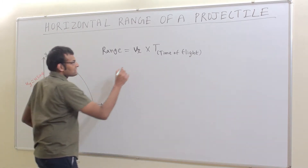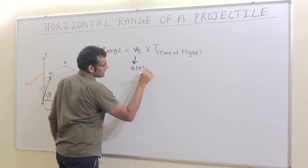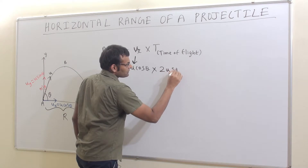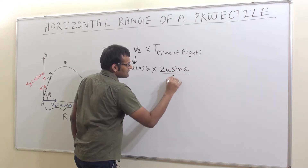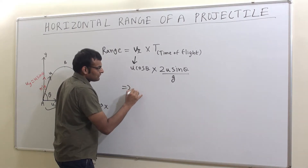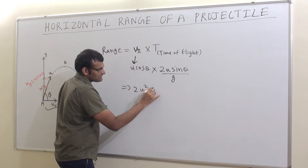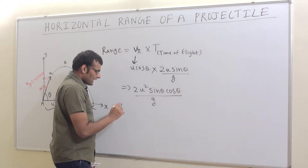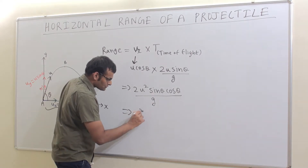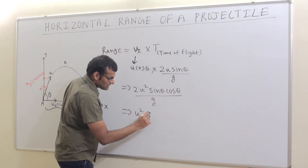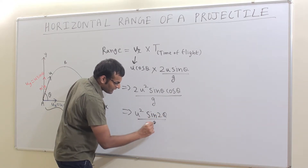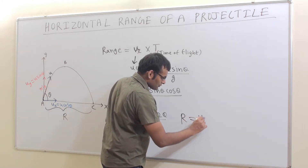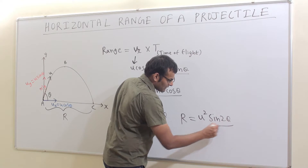ux is u cosθ, and the time of flight (from our previous video) is 2u sinθ / g. So what we get is 2u² sinθ cosθ / g. Simplifying further, since 2 sinθ cosθ = sin2θ, we get u² sin2θ / g.